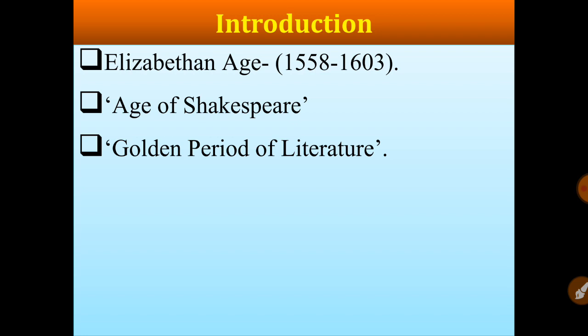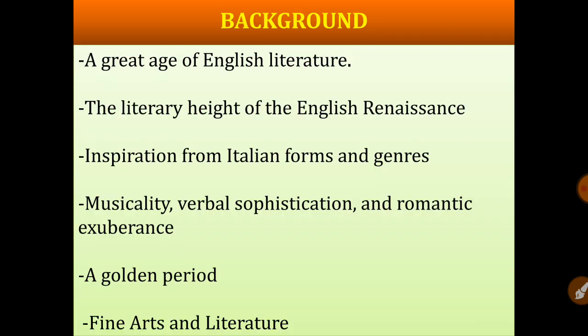Elizabethan poetry, as the name suggests, comprises the poetry written during the reign of Queen Elizabeth the First of England. The Elizabethan age, which spanned from 1558 to 1603, was a golden period in the history of English literature. Elizabethan literature refers to the body of work that emerged during the period of Queen Elizabeth. English literature flourished and witnessed its culmination during this age.